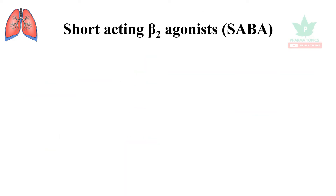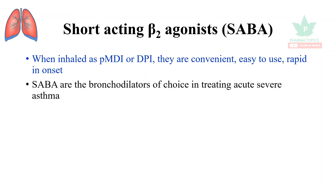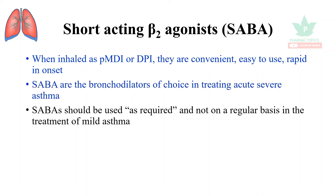Short-acting beta-2 agonists are called SABAs. When inhaled as pressurized metered-dose inhalers or dry powder inhalers, they are convenient, easy to use, and rapid in onset. SABAs are the bronchodilators of choice in treating acute severe asthma.